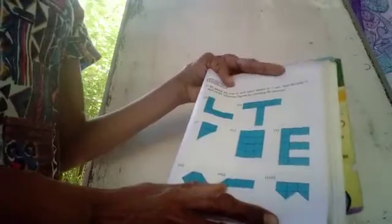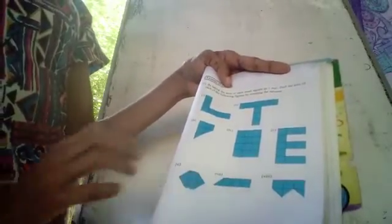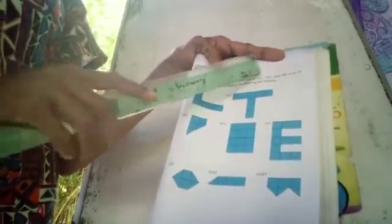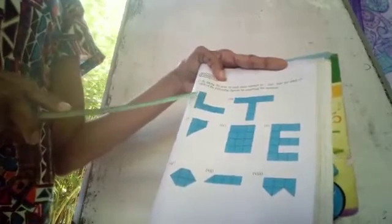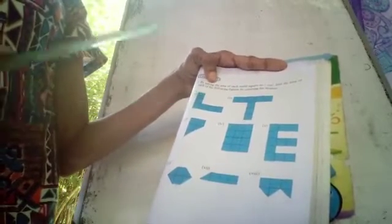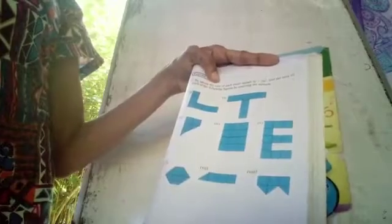By taking the area of each small square as 1 cm, find the area of each of the following figures by counting the squares.